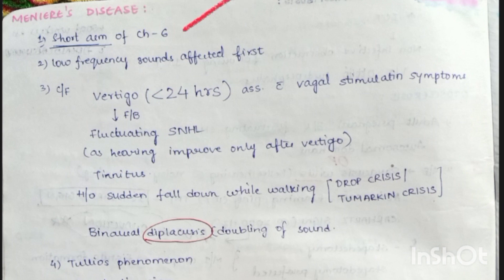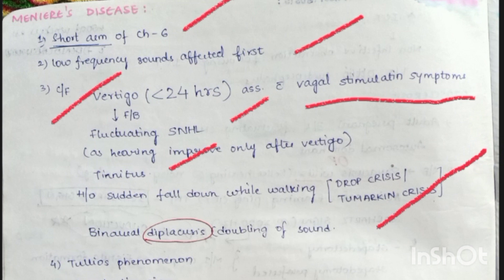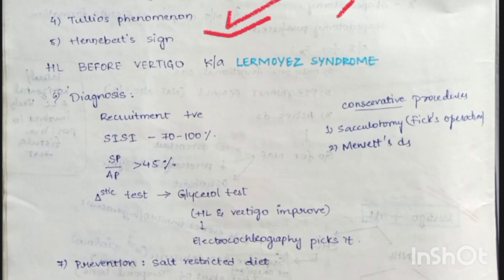Meniere's disease is associated with chromosome number 6. Low frequency sounds are affected first. Clinical features: vertigo lasting less than 24 hours associated with vagal stimulation symptoms, followed by fluctuating sensorineural hearing loss (hearing improves only after vertigo), tinnitus, and drop attacks (Tumarkin's crisis). Binaural diplacusis (doubling of sound) is seen. Tullio phenomenon and Hennebert sign are positive — unlike fistula, where Hennebert sign is negative.